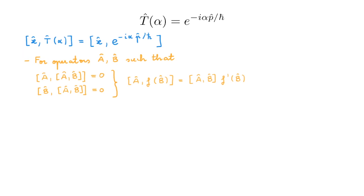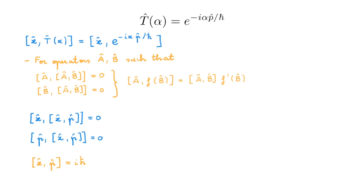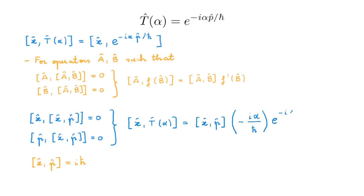The relevant operators are x and p. We calculate [x, [x, p]] = 0 and [p, [x, p]] = 0, both following from the canonical commutation relation [x, p] = iℏ. Applying the formula: [x, T(α)] = [x, p] · (−iα/ℏ) e^(−iαp/ℏ) = iℏ · (−iα/ℏ) · T(α) = αT(α).